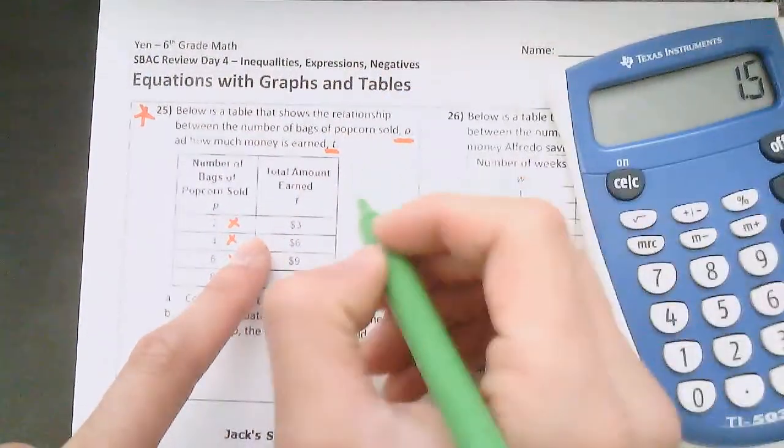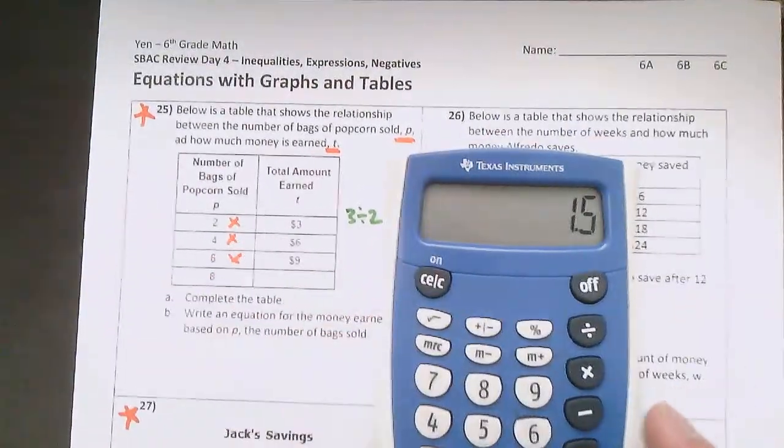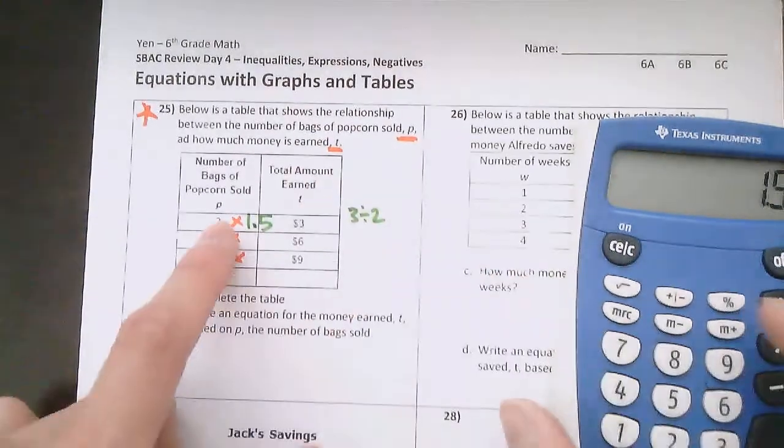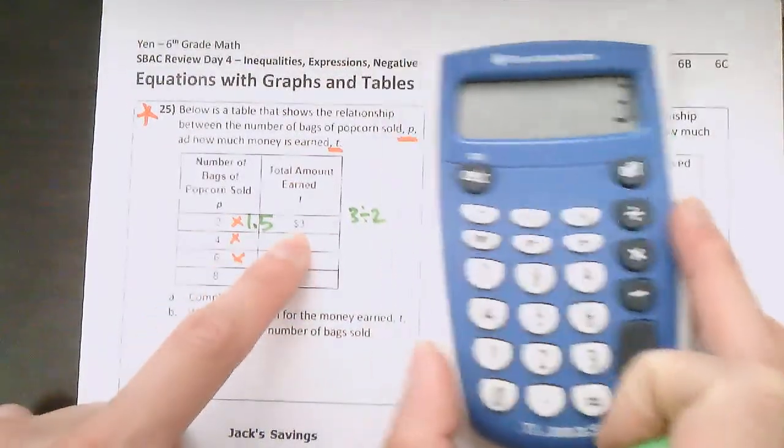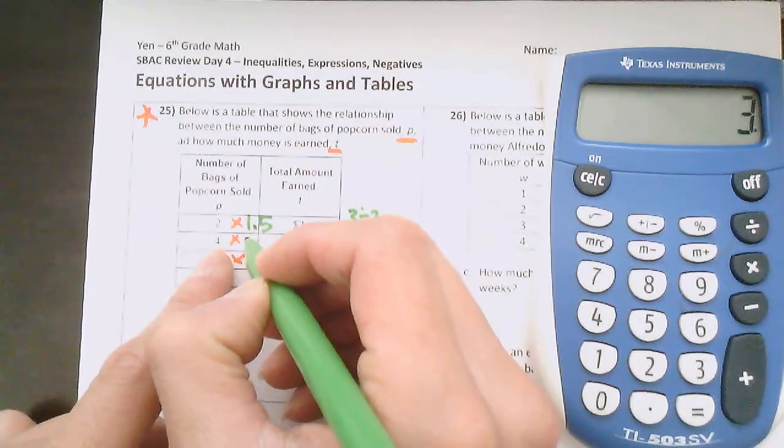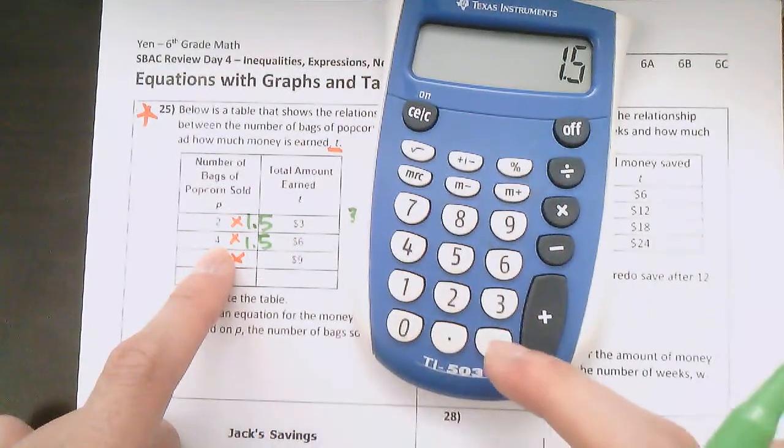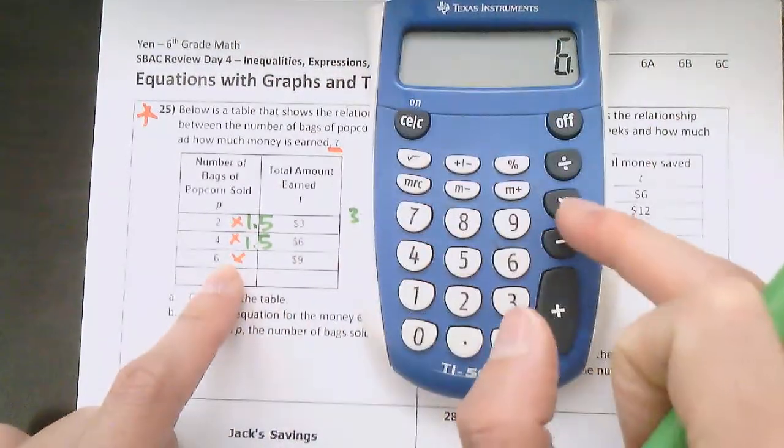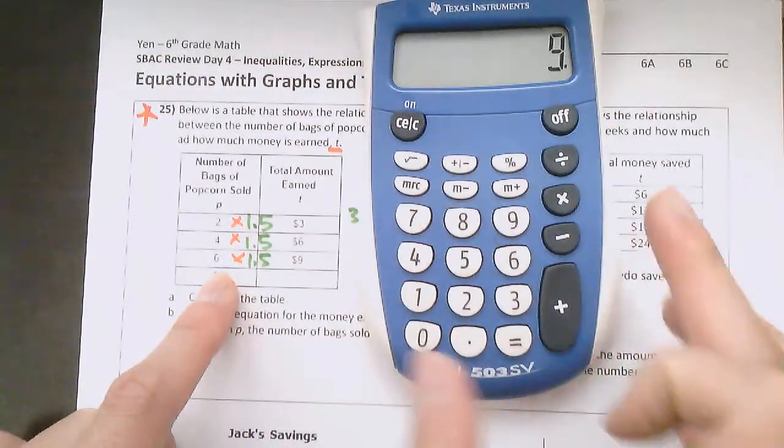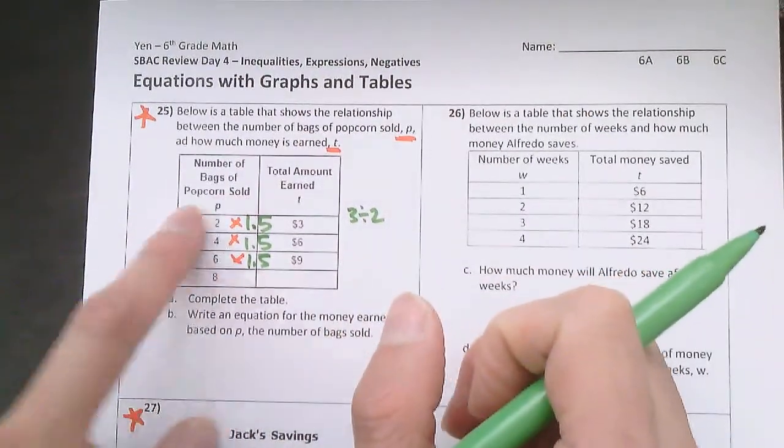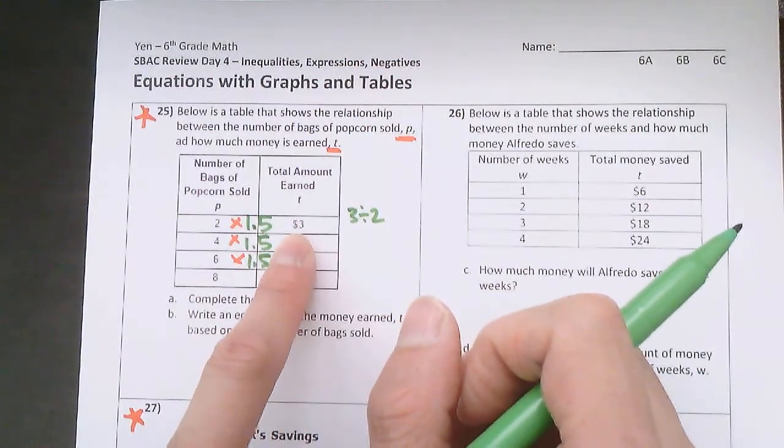I could do 3 divided by 2 equals 1.5. What I'm doing is 3 divided by 2. I'm going the opposite way, and that gets me 1.5. Let's double check. 2 times 1.5 equals 3. That works. That would mean 4 times 1.5 should equal 6. Let's check. 4 times 1.5 equals 6. Good. And 6 times 1.5 equals 9. So now I know the relationship is however many bags I'm selling, I'm multiplying that times 1.5 to see how much I earned.